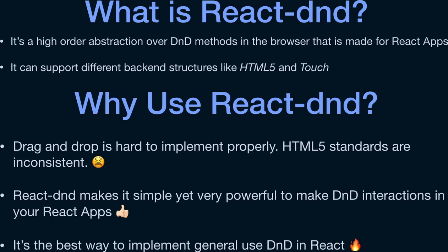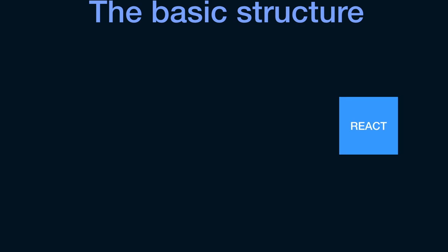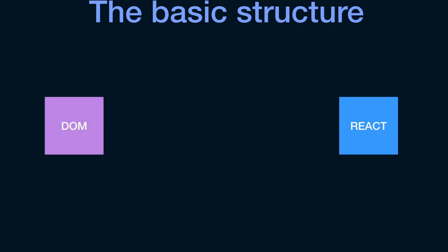Before we jump into React DnD and the code, there are many abstractions involved and I want to take time to explain those slowly. We need to understand each abstraction and each concept before we can deal with it. First, let's inspect the basic structure of what's happening in the DOM and where React DnD actually sits. We all know React is here, the actual DOM is what people see in the browser, and React communicates with and manipulates the DOM using the virtual DOM.